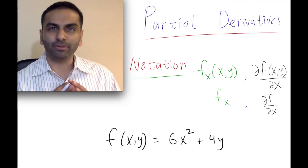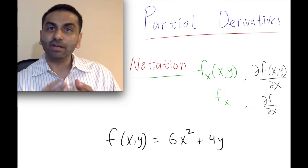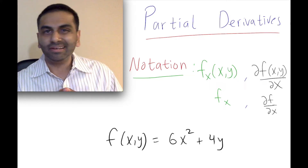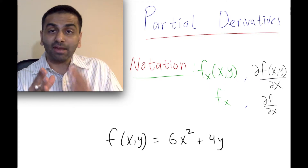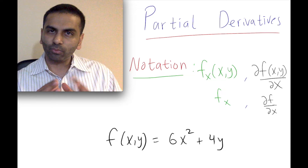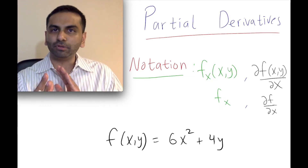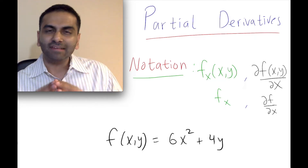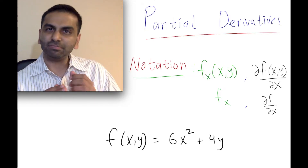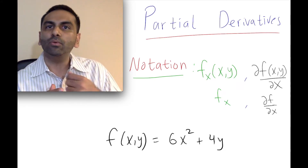In this video we're going to talk about partial derivatives. A partial derivative refers to when you take the derivative of a function that has more than one input variable. So instead of y being your output and x being your input, you might have something like x and y both being input variables and z being your output variable. Because you have multiple input variables, it's an incomplete question to just say 'take the partial derivative of this function' — I have to specify which input variable I'm taking it with respect to.